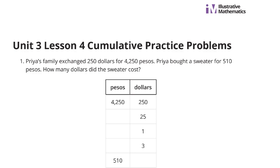Priya's family exchanged $250 for 4,250 pesos. Priya bought a sweater for 510 pesos. How many dollars did the sweater cost? Well, certainly one way to solve this question is to use the table. And we have our dollars broken down here on the right side, and the pesos going from 4,250 with a bunch of blanks to 510.